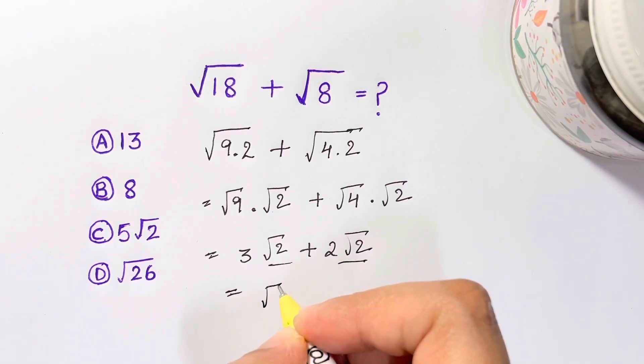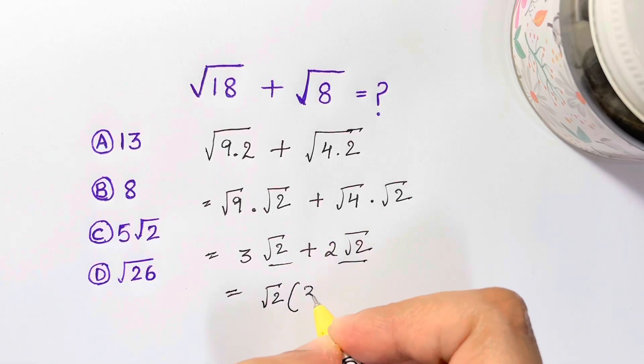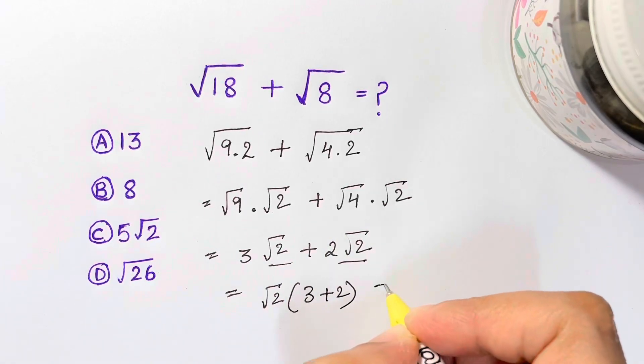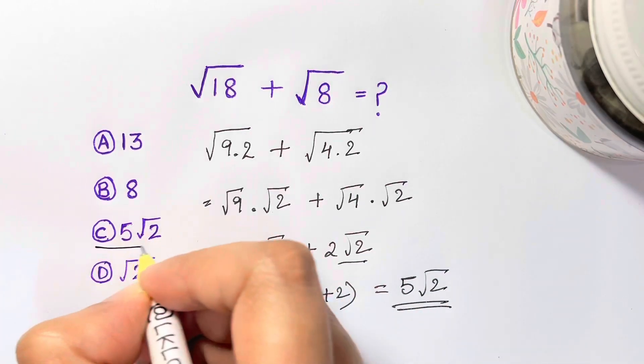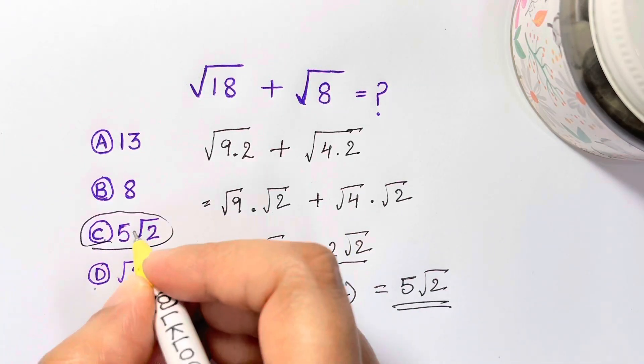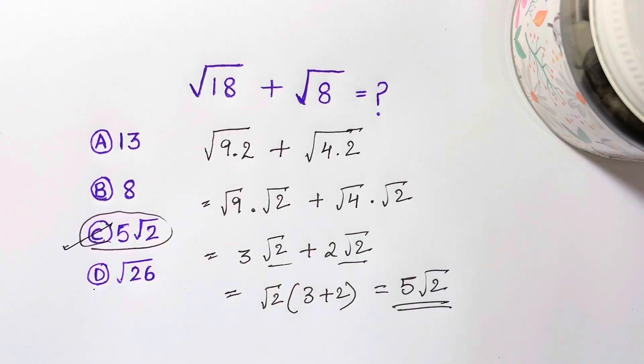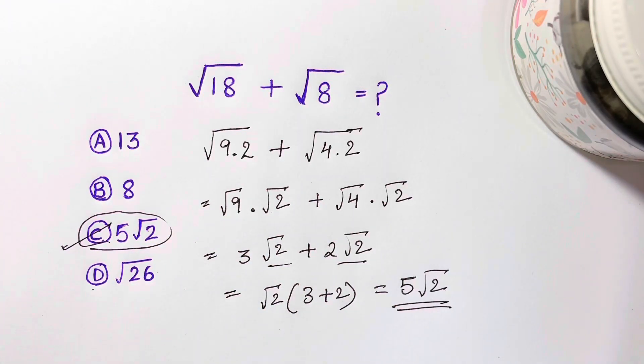Now you have something in common, square root of 2, so you're left with 3 plus 2 which is equal to 5 root 2 and that's your answer. It's not square root of 26, it's 5 root 2. Thank you so much, bye bye, take care.